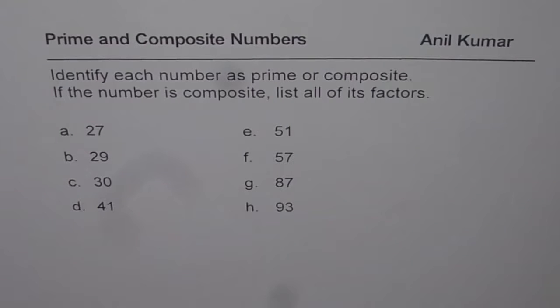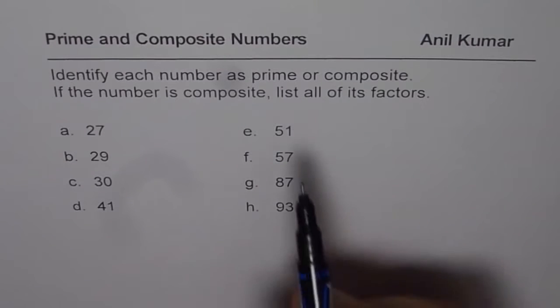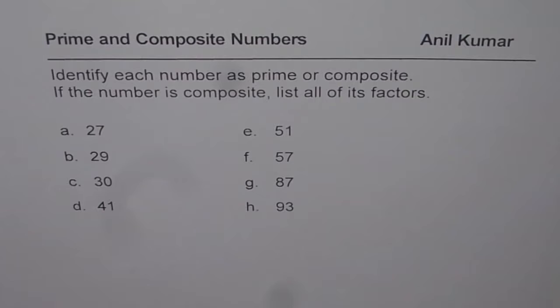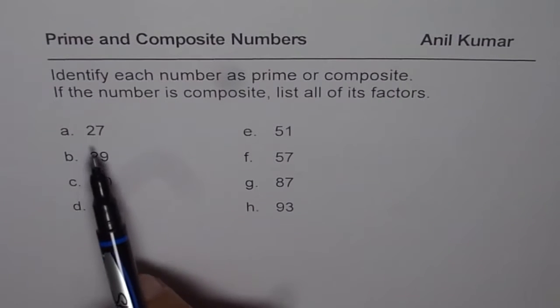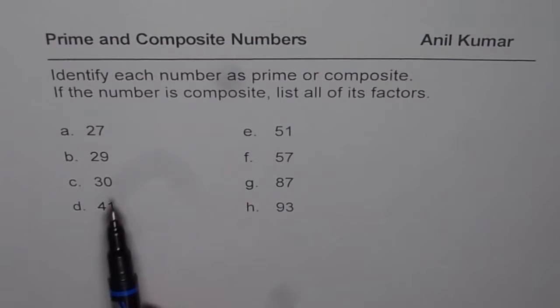I'm Anil Kumar and here is a test question for you on prime and composite numbers. You need to identify each number as prime or composite. If the number is composite, list all of its factors. So we have 8 numbers here. First one is 27, then 29, 30, 41.